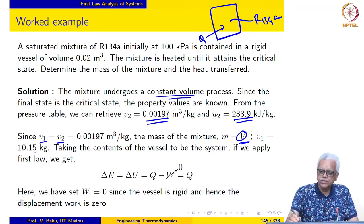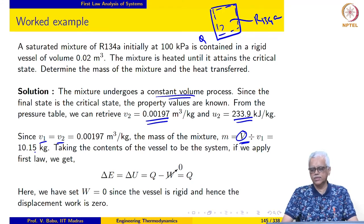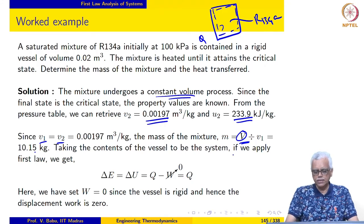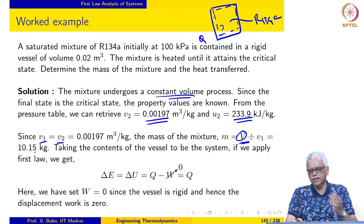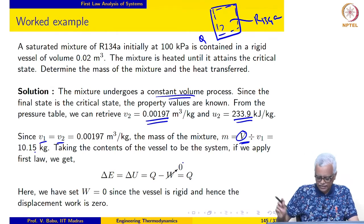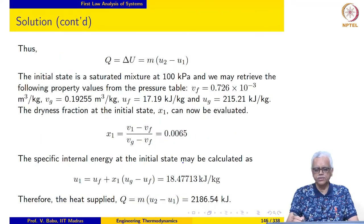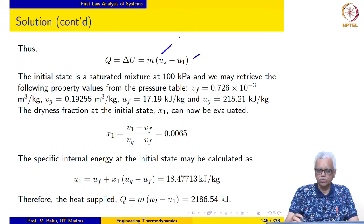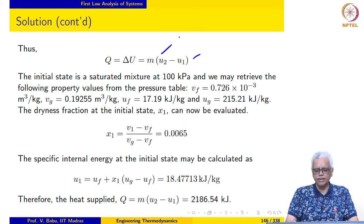If we take our system to be the contents of the vessel, then delta E equals delta U equals Q minus W. There is no displacement work or any other forms of work, so W is equal to zero. We can now evaluate Q from this: Q equals delta U equals M times U2 minus U1. U2 is already known to us, and U1 has to be evaluated.